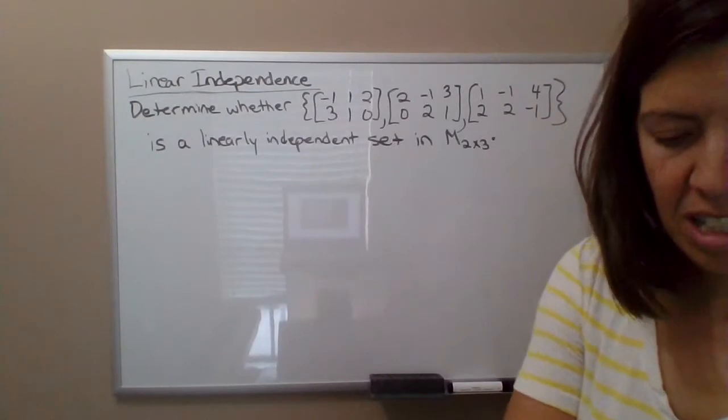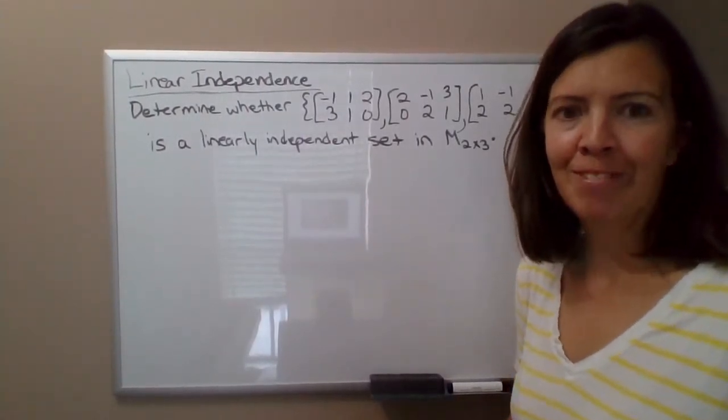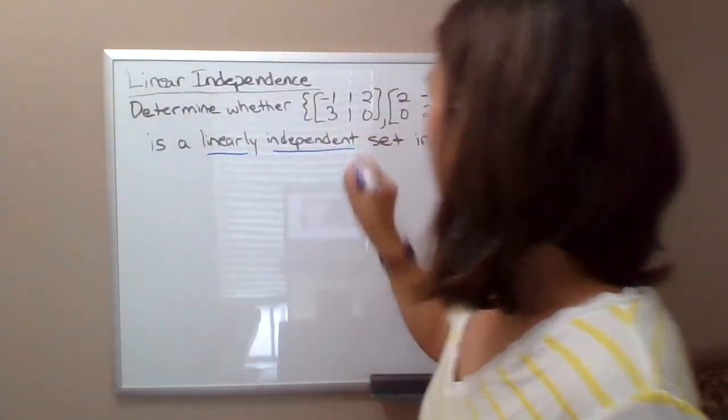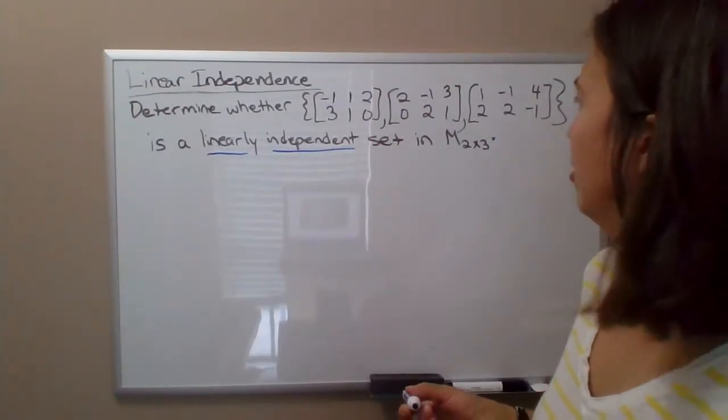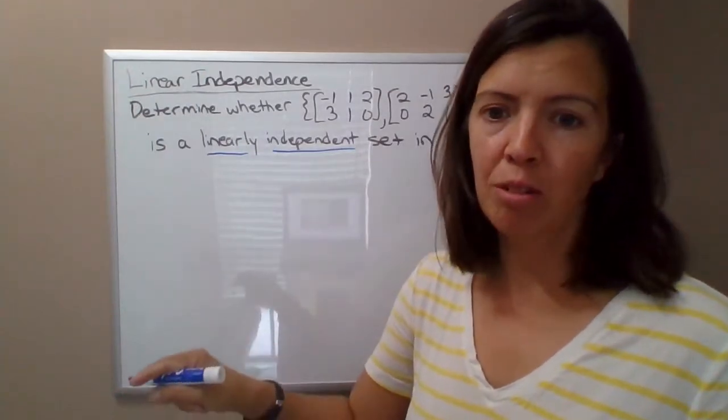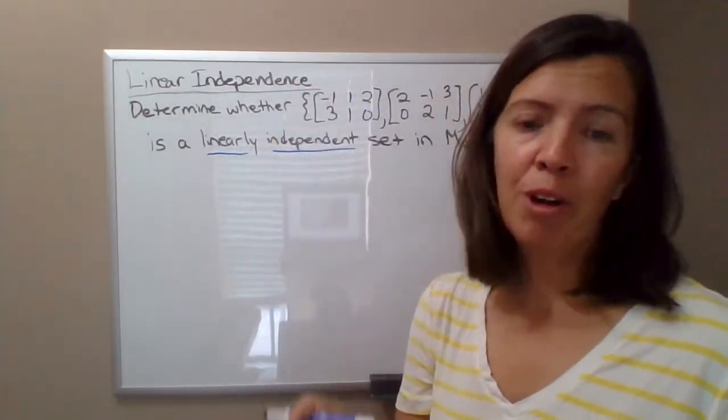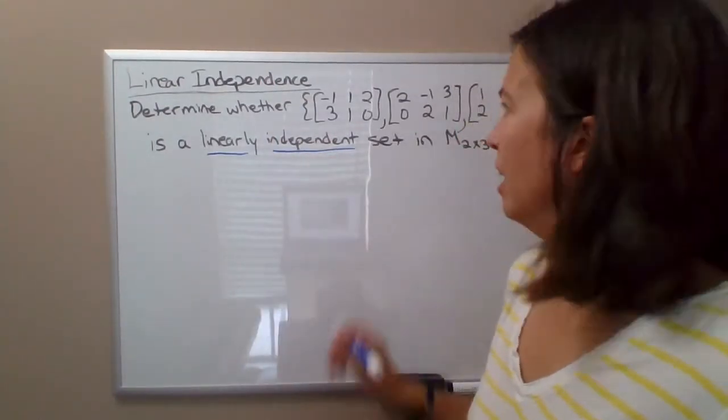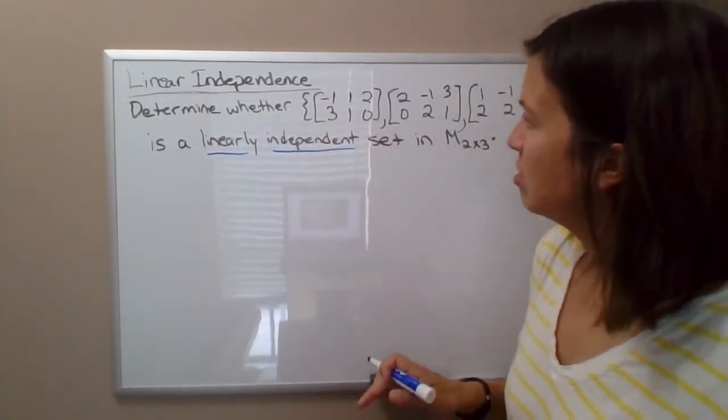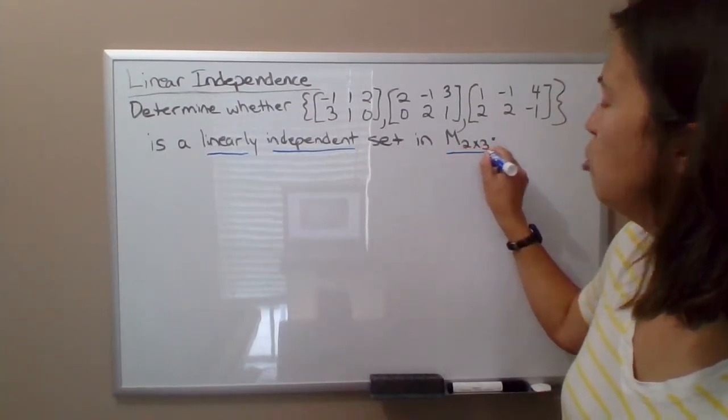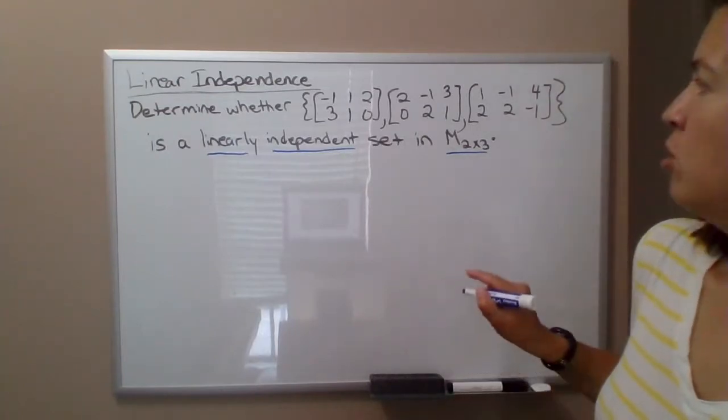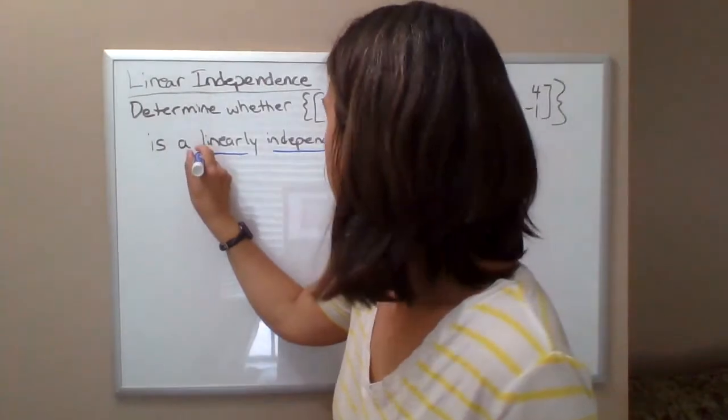So we've determined whether vectors are linearly independent, column vectors in the past, back in chapter one I think. Now we're looking at a collection of matrices. In these instances it's important to lean on your actual definition of linear independence. A collection of vectors - and now when we say vectors what we mean are elements of a vector space, we don't mean necessarily like a column of one two three - in this case what we're referring to as vectors are these two by three matrices, which are elements of the vector space M2 by 3, the vector space containing all two by three matrices.